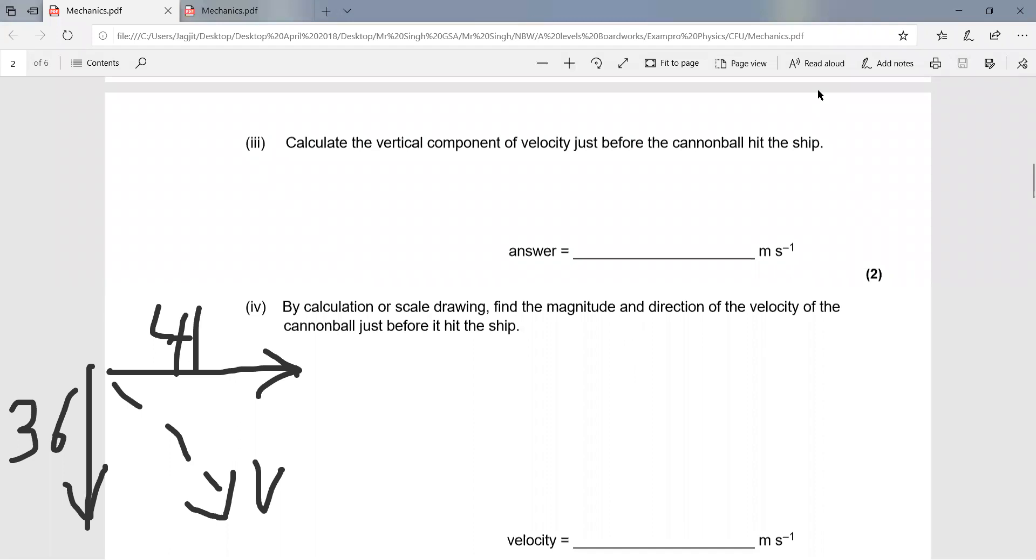For question four, we have to plug in the values of the horizontal velocity, which is 41 meters per second, and the vertical velocity, which is 36 meters per second. Using the Pythagoras theorem, you can calculate the resultant velocity as 41 squared plus 36 squared, all square rooted, which comes out to be 54 meters per second to two significant figures.